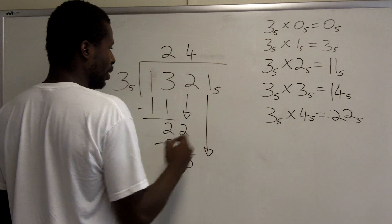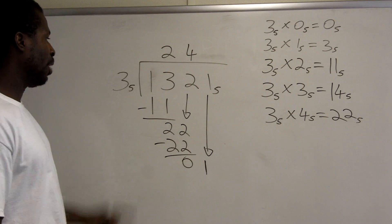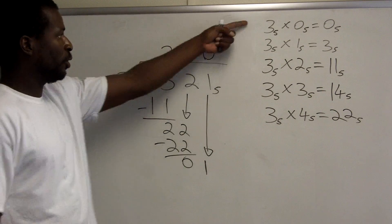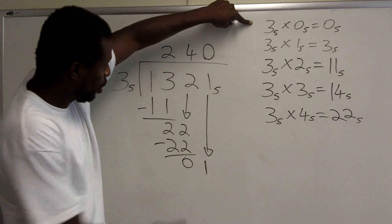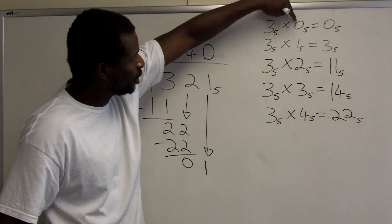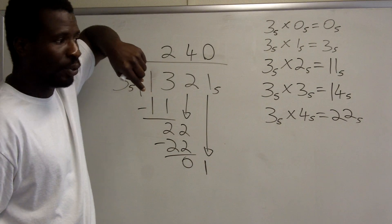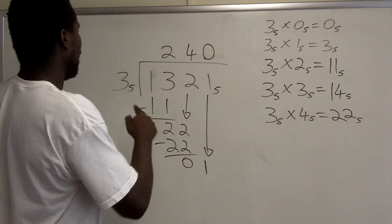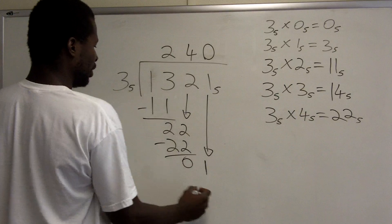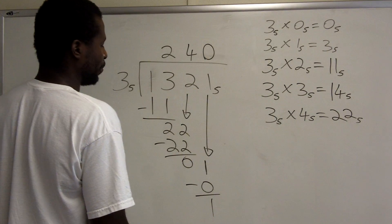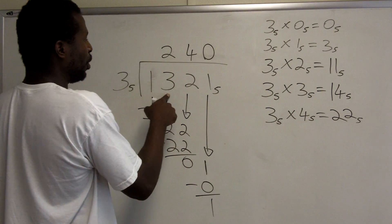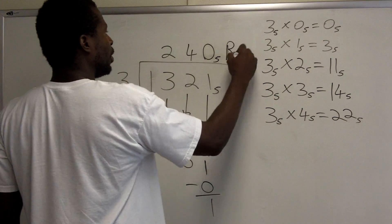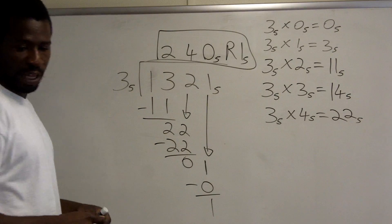I bring down the next digit, which is 1. How many times does 3 base 5 go into 1 base 5? It does not at all — 0 times. The largest number on the list less than or equal to 1 is 0, and 3 is too big. So I record a 0 up here; if you don't record that 0, you'll have the wrong place value. 0 times 3 is 0; I subtract and get 1. So 3 base 5 goes into 1,321 base 5 giving 240 base 5 with a remainder of 1 base 5.